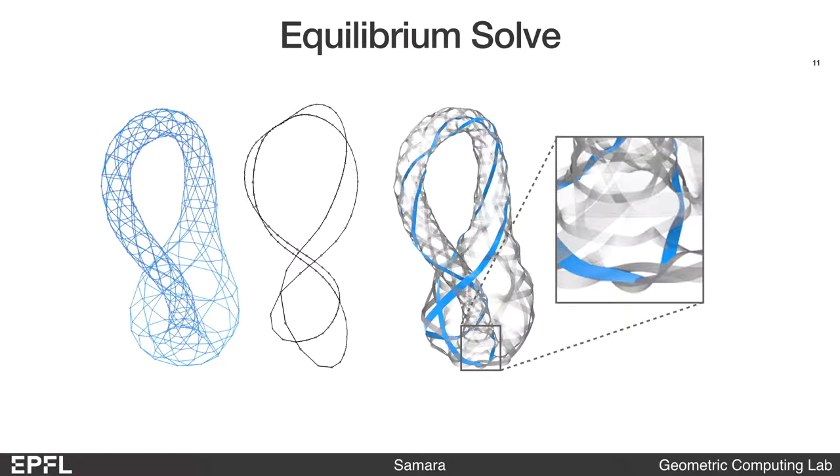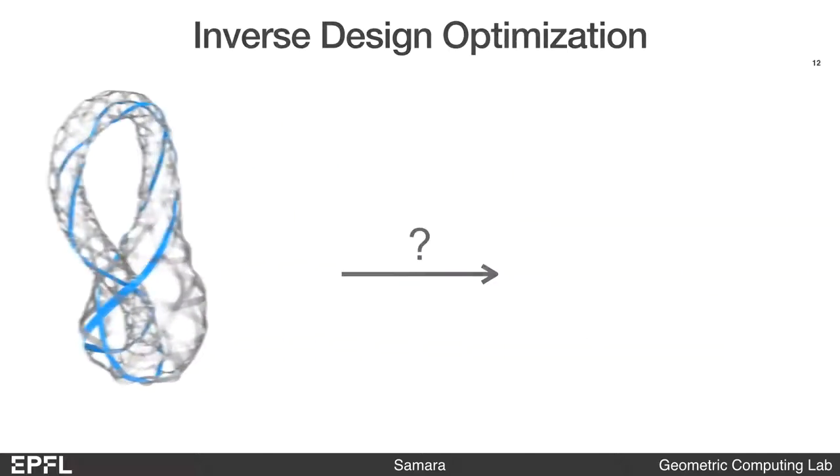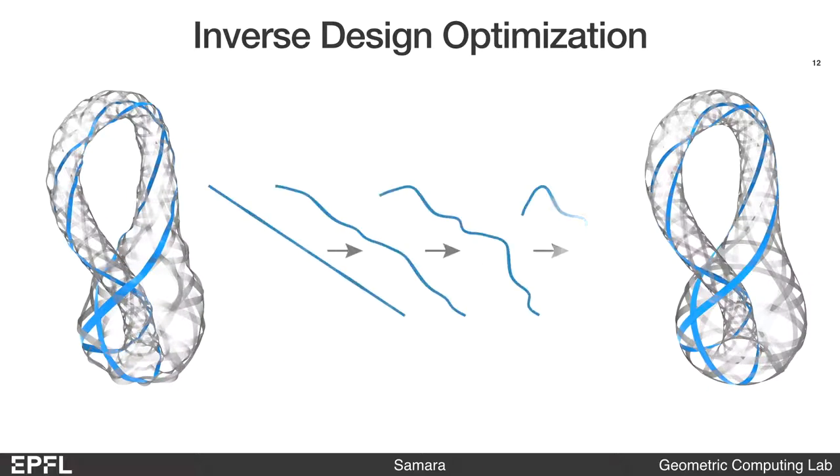To find a stable woven structure with better shape approximation and lower stresses, we numerically optimize over curved ribbons.